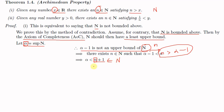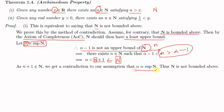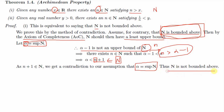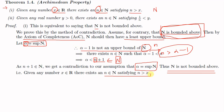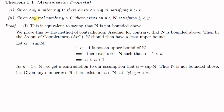So we have α less than some element of ℕ, namely n + 1. This is a contradiction, because we assumed α = sup ℕ, meaning α should be greater than or equal to every element of ℕ. Since α < n + 1 contradicts our assumption, that assumption — that ℕ is bounded above — must be false. Hence ℕ is not bounded above, which implies Part 1: for any x ∈ ℝ there exists n ∈ ℕ with n > x.